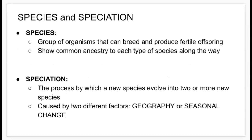A species itself is a group of organisms that can breed and produce fertile offspring — that's a key part of the definition. Their offspring are also able to reproduce, and it shows common ancestry to each type of species. Speciation, on the other hand, is the process by which a new species evolves into two or more new species.